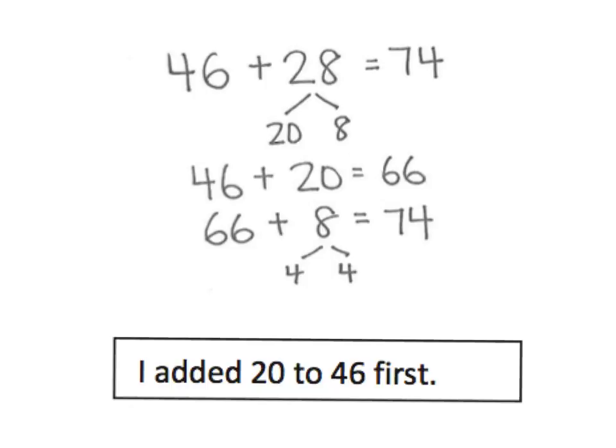This method involves leaving that first addend alone and decompose the second into tens and ones, so you get 46 plus 20 gives us 66, and then we add in the 8. They further decompose down here and say, well, 66 needs 4 more to get to the next decade, and so that would be 4 and 4, so that's 74. One way to do it, it's not required.